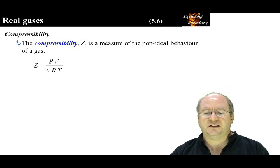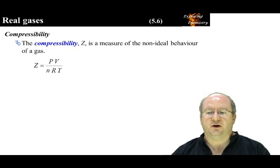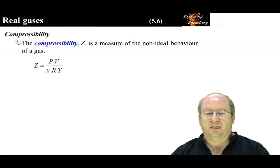One measure of the extent of non-ideal behavior is the compressibility. The compressibility with symbol Z is given by the equation shown here.